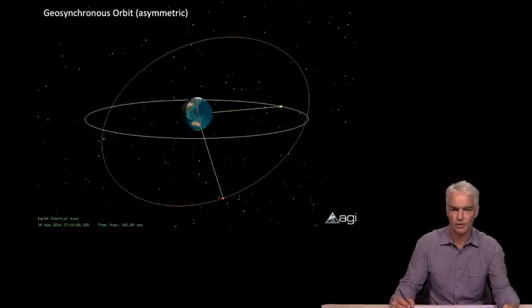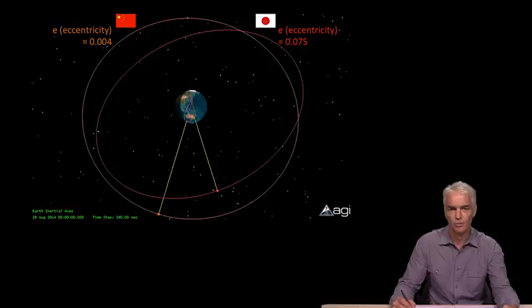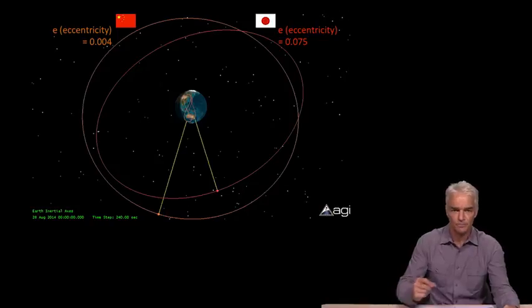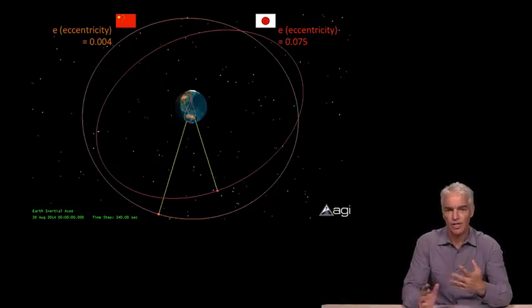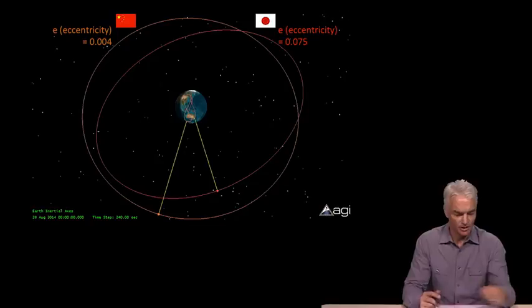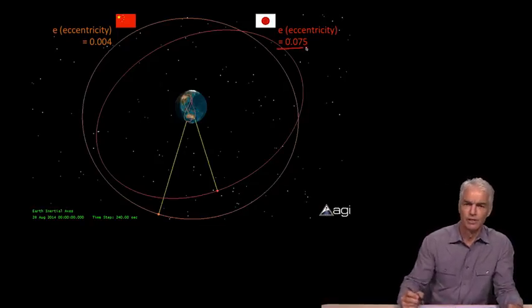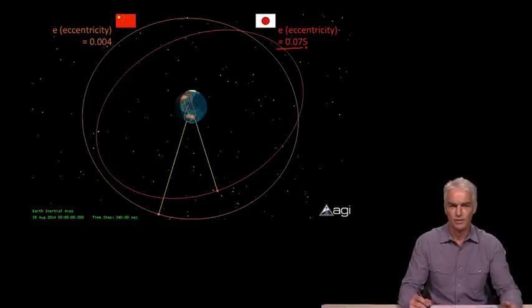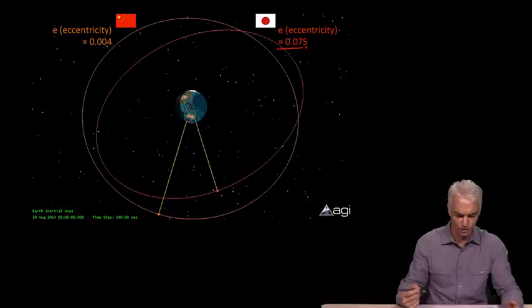So these two orbits I just showed you are actual orbits. The symmetric one is one of the satellites of the Beidou system, and the asymmetric orbit is the satellite of QZSS of Japan. There are just a few Keplerian parameters. The one that changes the shape of the orbit is E, the eccentricity. The Beidou eccentricity is approximately zero, and the QZSS eccentricity is deliberately set to something not nearly so close to zero. And that gives you the asymmetry of the orbit, and gives the orbit this property that it spends more time over Japan than it would over any other place.